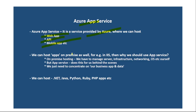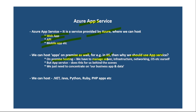Now you may have a question: we can host our apps on-premise as well, for example in IIS, so why should we use App Service? When we have on-premise hosting, we have to manage the server, infrastructure, networking, OS, etc. ourselves. But Azure App Service does this for us behind the scenes, and we just need to concentrate on our business app and data.